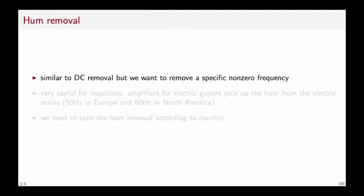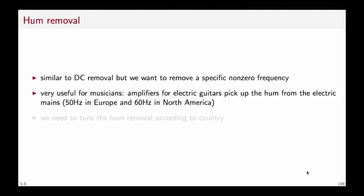Finally let's consider the hum removal filter. The hum removal is to the DC notch what the resonator was to the leaky integrator. In other words the hum removal is a DC notch whose stop band we shift in order to be able to eliminate a specific frequency. A classic use case for the hum removal is music. Amplifiers and electric guitars tend to pick up the hum generated by the AC current in the mains. That frequency is 50 Hz in Europe and 60 Hz in North America. 50 or 60 Hz are well within the hearing range so not only is the hum audible but it is also particularly irritating.